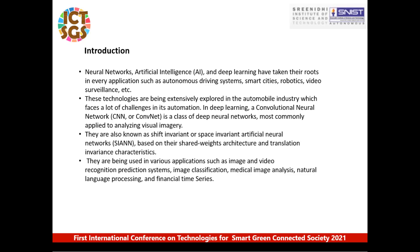In deep learning, a convolutional neural network — CNN or ConvNet — is a class of deep neural networks most commonly applied to analyzing visual imagery. These visual images are processed through convolutional neural networks to give predictions. They are also known as shift-invariant or space-invariant artificial neural networks, and are used for image classification, medical image analysis, natural language processing, and financial time series predictions.